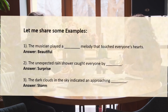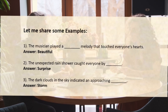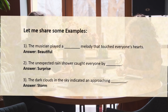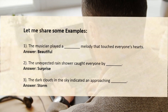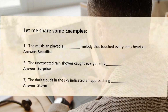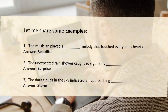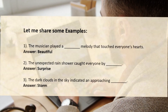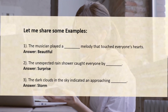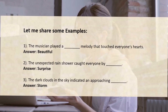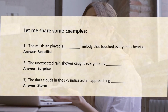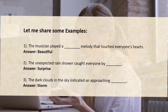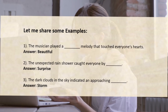Let me share some examples. Example one: 'The musician played a ___ melody that touched everyone's heart.' There are multiple answers that could fit here, which is why there are no multiple choices. The answer could be 'beautiful.' Example two: 'Unexpected rain shower caught everyone by ___.' The answer is 'surprise.' Example three: 'The dark clouds in the sky indicated an approaching ___.' The answer is 'storm.'